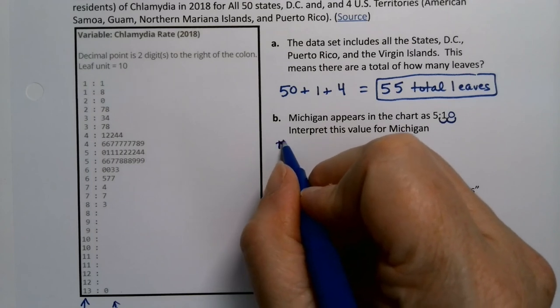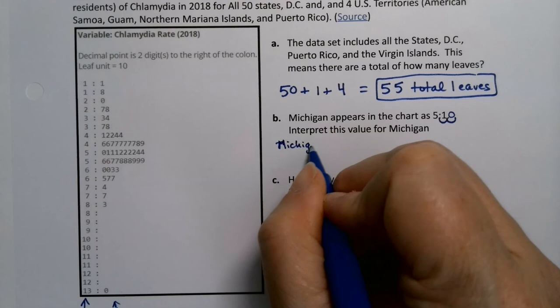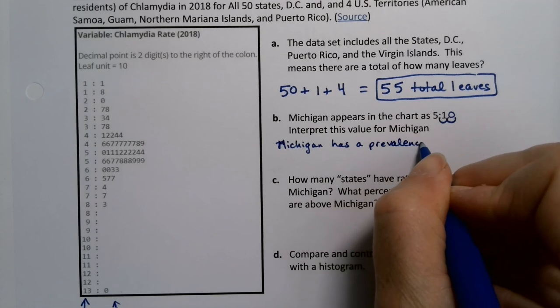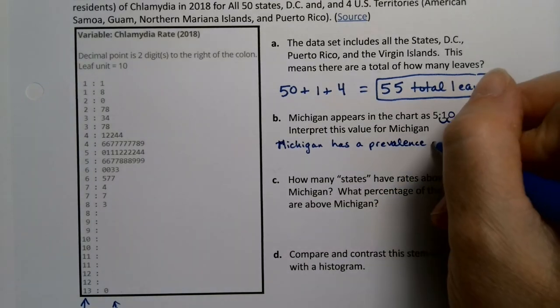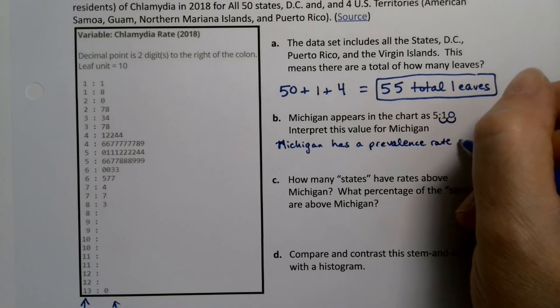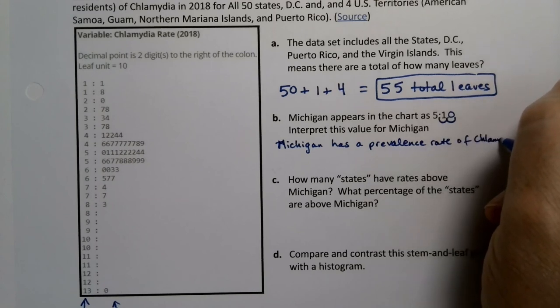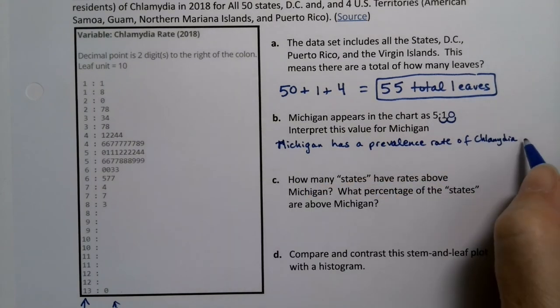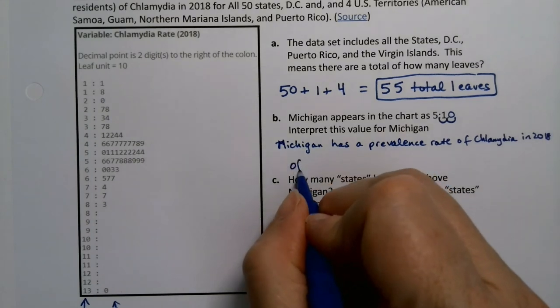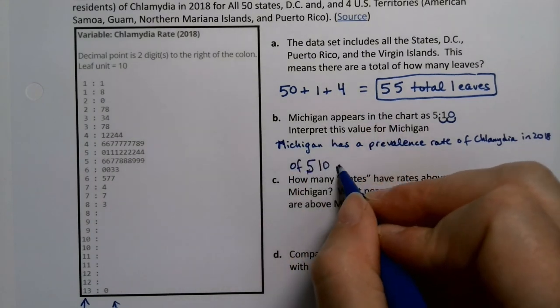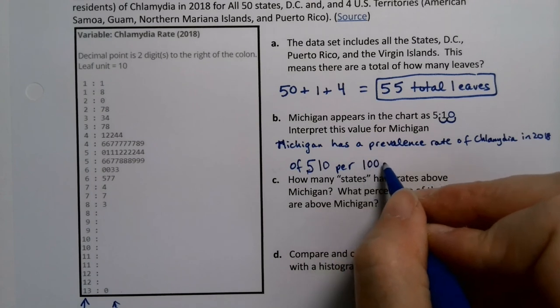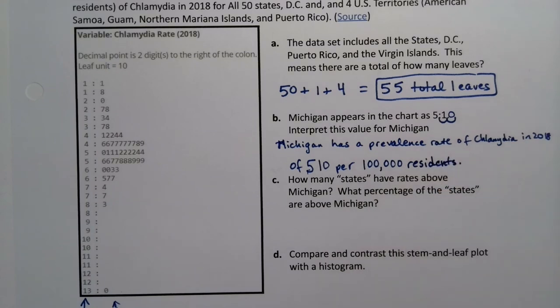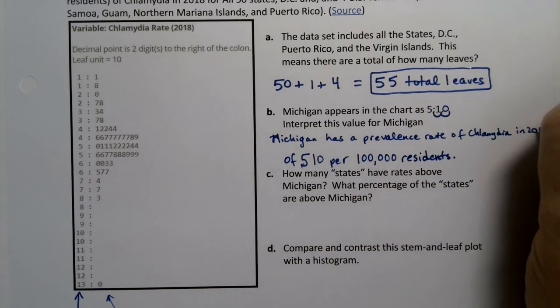Michigan has a prevalence rate, which means basically the prevalence of chlamydia in Michigan in 2018, of 510 per 100,000 residents. So out of every 100,000 residents in Michigan, we expect 510 of them to have chlamydia, at least in 2018.